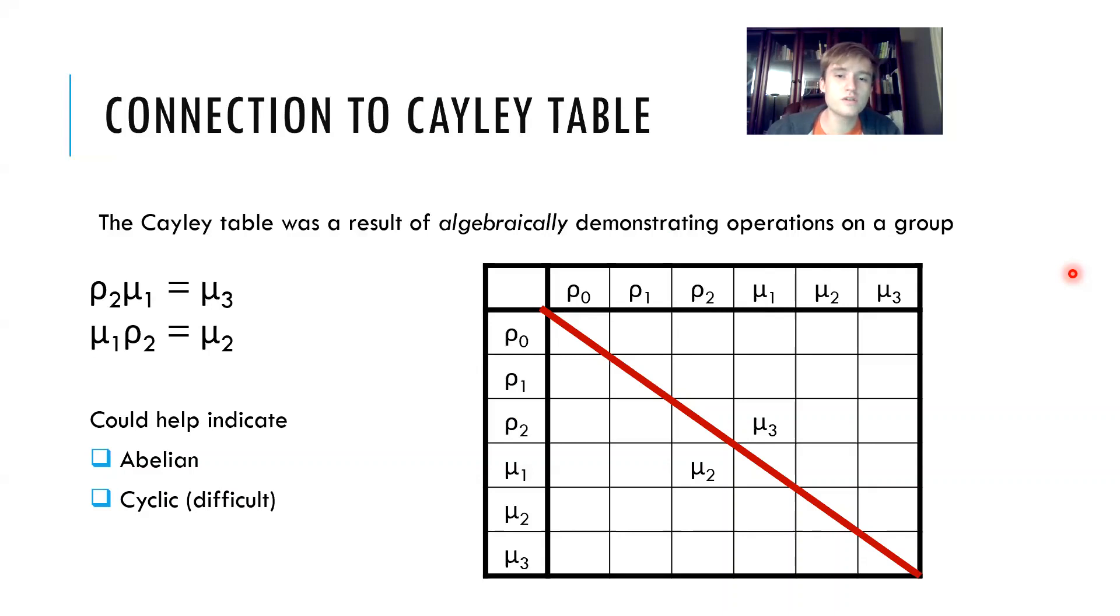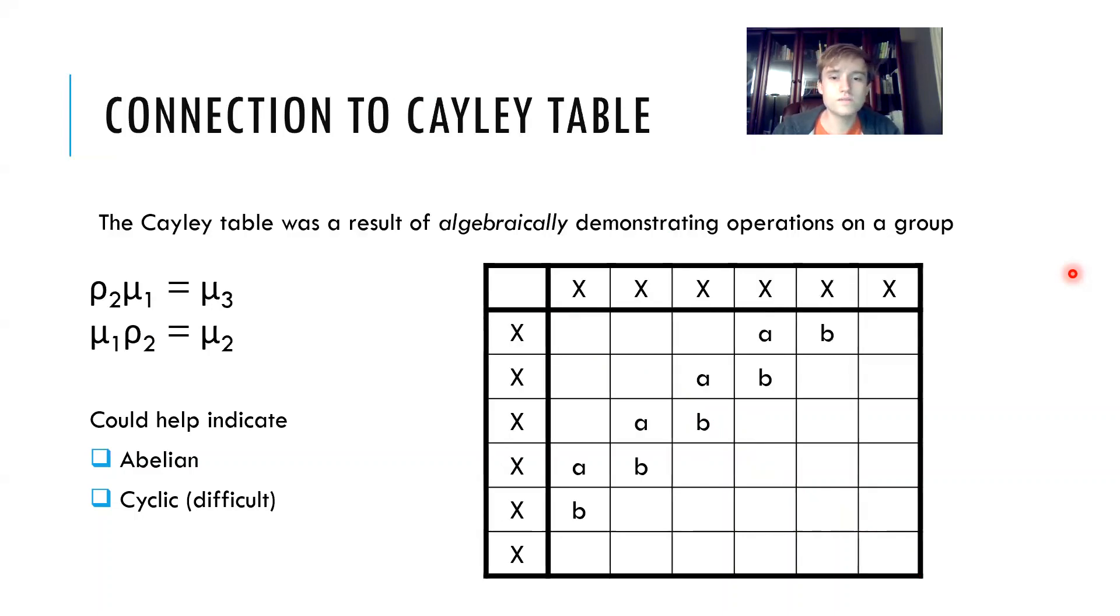We can also see from Cayley tables whether the group is cyclic. That happens when we can arrange the table in such a way that we have kind of a cascading effect. However, this is really difficult and you kind of have to have some other reason to believe it's cyclic in order to find out how to arrange the letters like this.